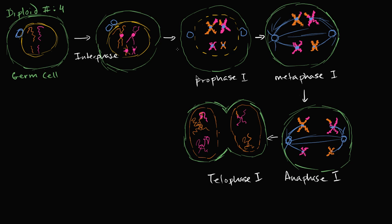And let me draw the centrosomes which are outside of the nuclear membrane, just like that. And the microtubules are also dissolving. And you have your cytokinesis, so these separate into two cells.